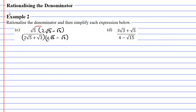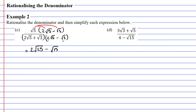Let's start with our numerator and expand the brackets. We start by multiplying root 5 by 2 root 5 — we have the whole number 2, and then root 5 times root 5 is the square root of 25, because 5 times 5 is 25. Now we multiply root 5 by root 3: 5 times 3 is 15, so we get minus the square root of 15.